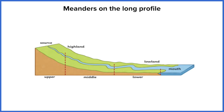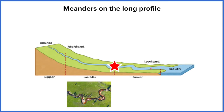Meanders are the result of lateral erosion — that is, erosion to the sides. We tend to find lateral erosion in the lower courses of the river as opposed to the upper course, though we do find it in both the middle and lower course. However, meanders tend to be less frequent and smaller in the middle course.